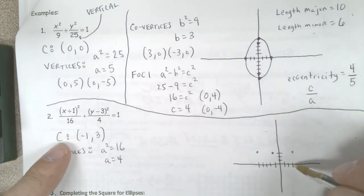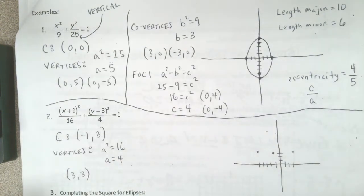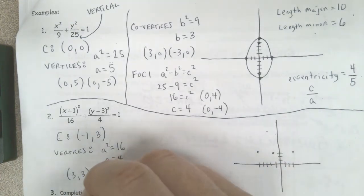Now those points are going to be the points 3, 3 and the point negative 5, 3.